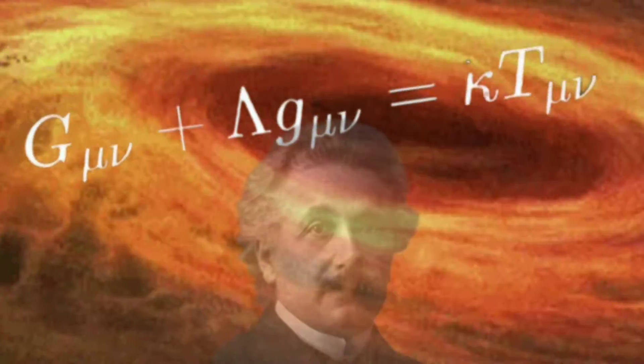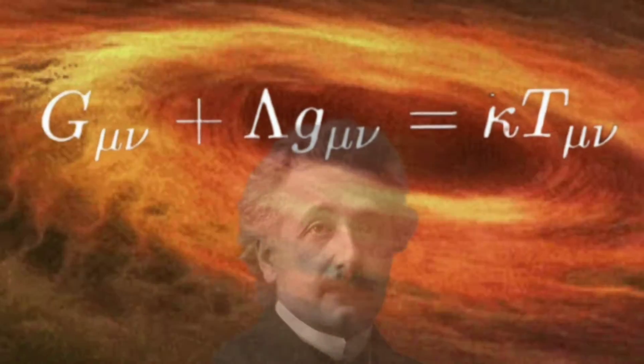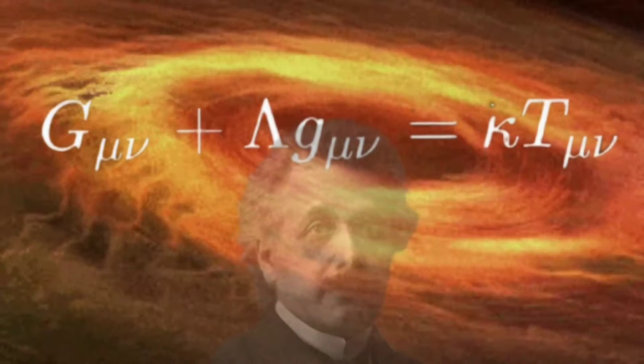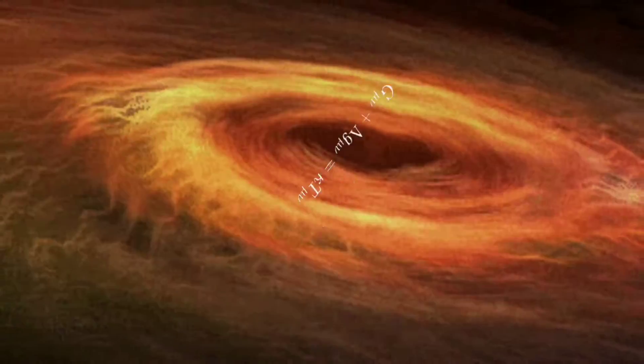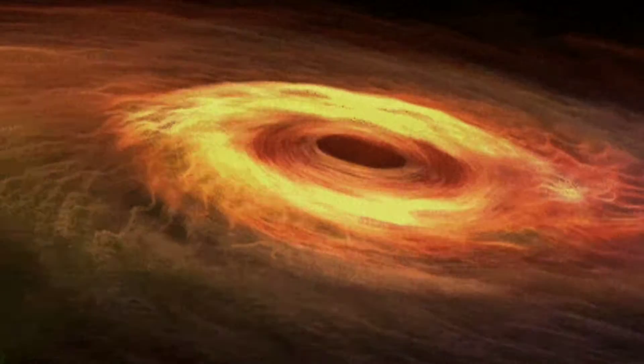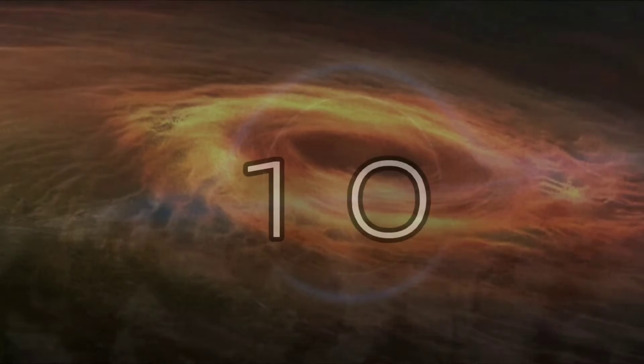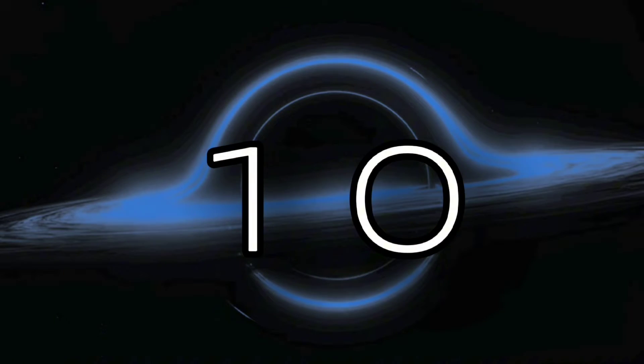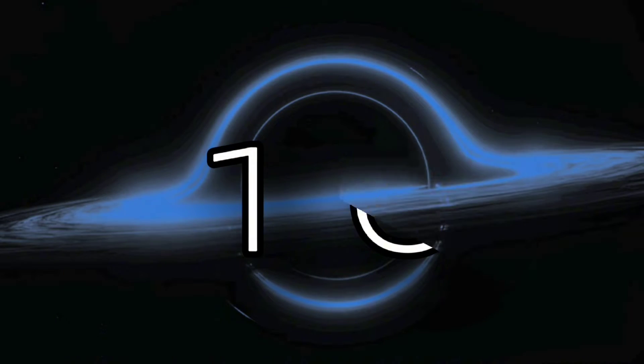He would be the very first to find an exact solution to Einstein's field equations, and yet he managed this mathematical feat while on the battlefield of World War I. Here are 10 facts about the German astrophysicist Karl Schwarzschild.